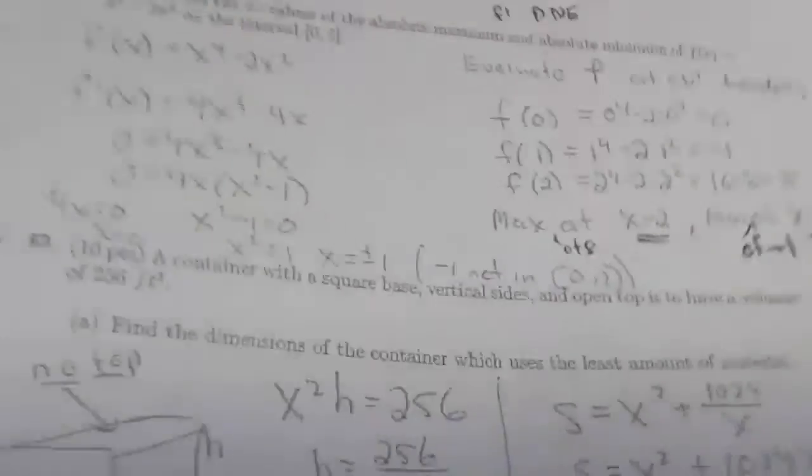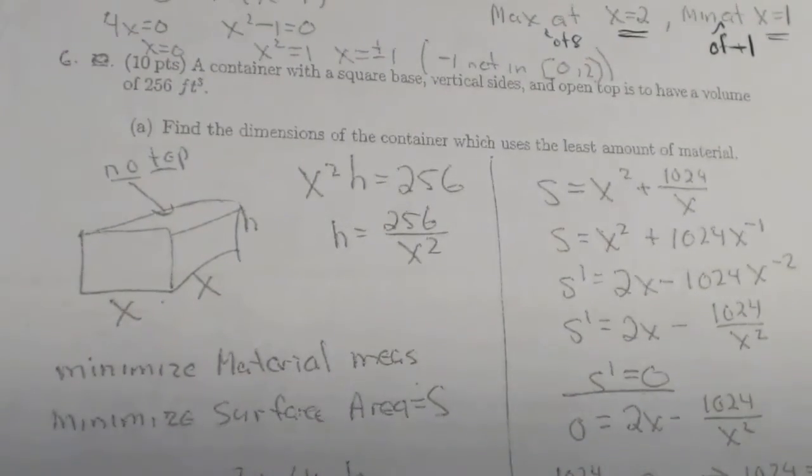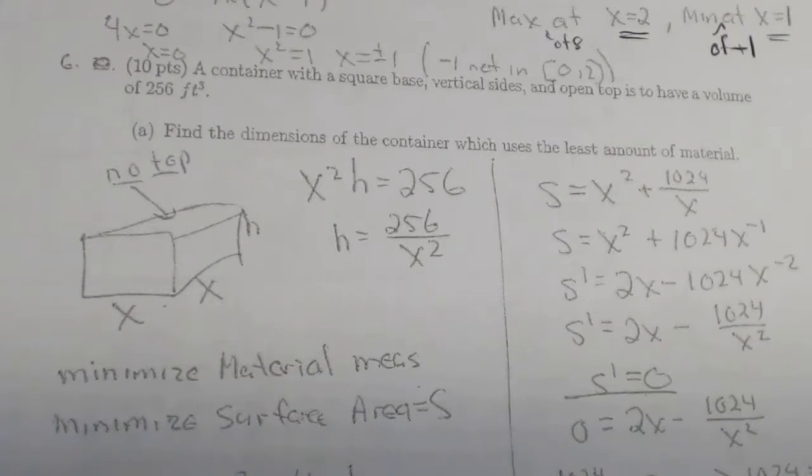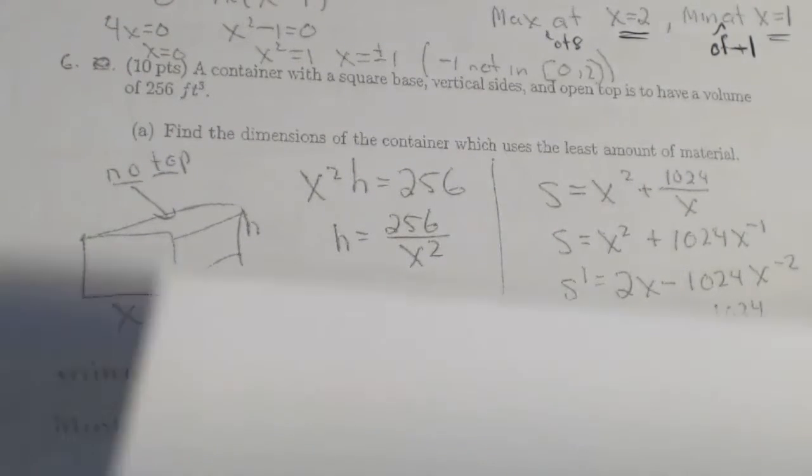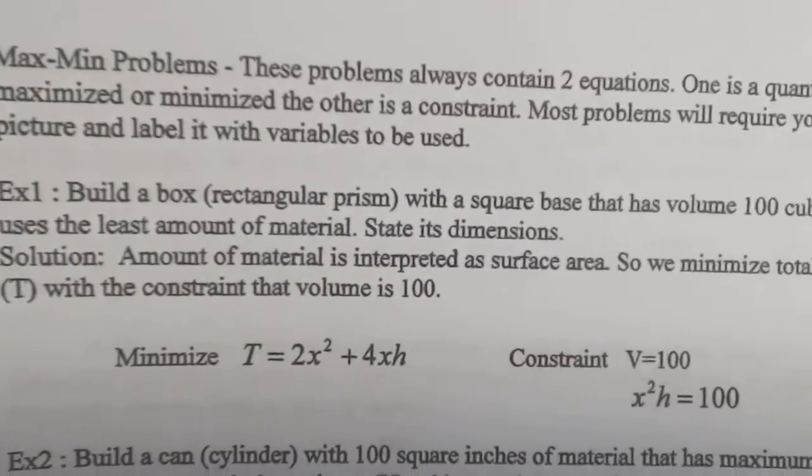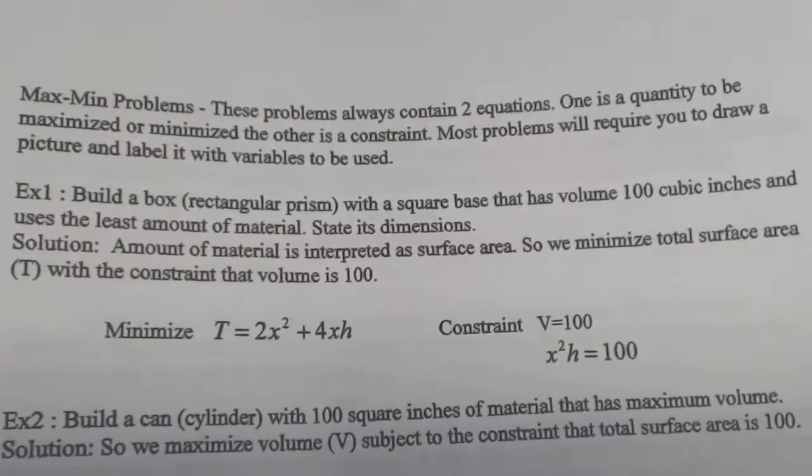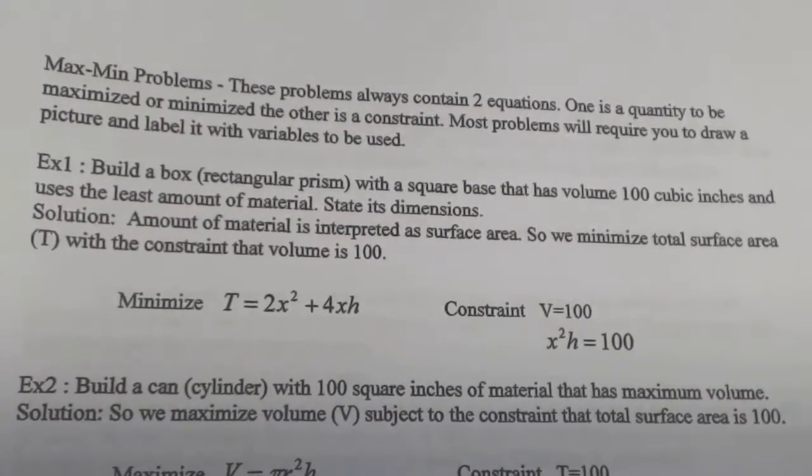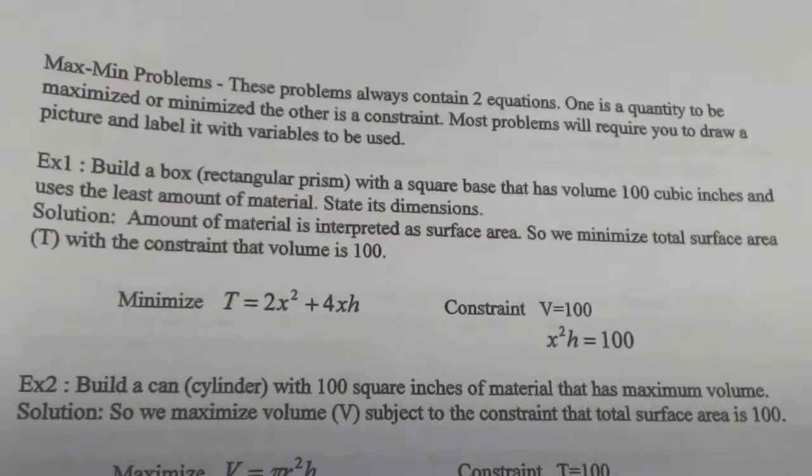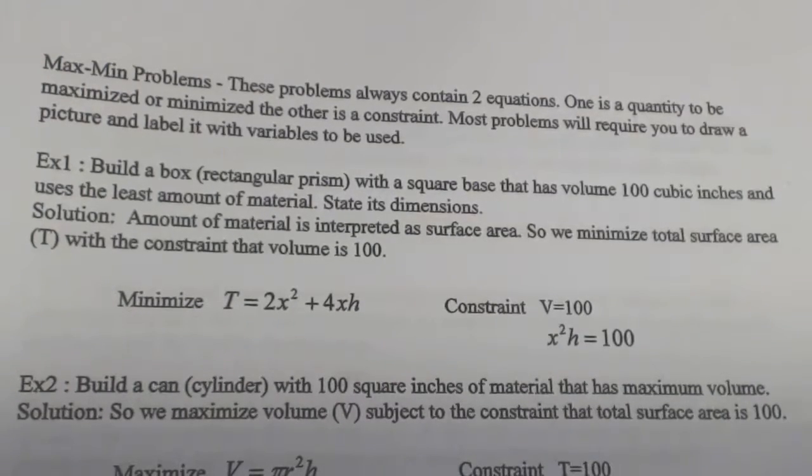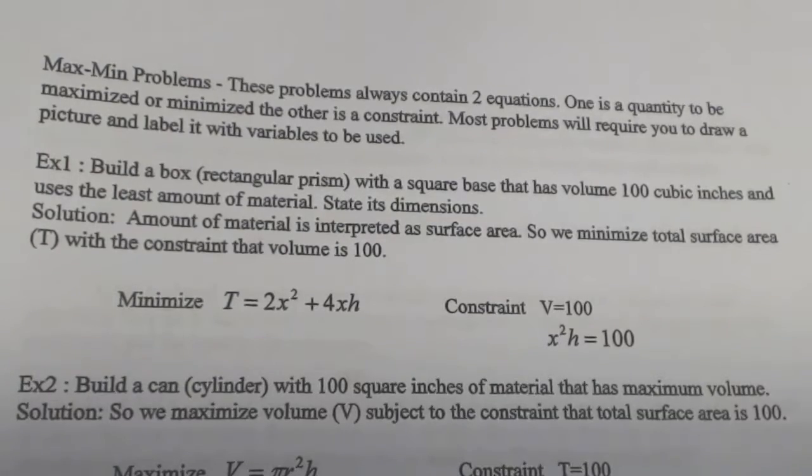Okay, we've got this container problem, and you should be convinced that all of these problems like this are exactly the same. At least I hope that you see them being the same. At the end of calculus in a nutshell, it talks about maximum problems. It says these problems always contain two equations. One equation is going to be maximized or minimized, and the other one is called a constraint or a secondary equation.